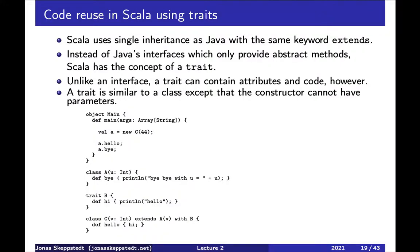Both Scala and Java have single inheritance, as opposed to C++ with multiple inheritance, for instance. Instead of Java's interface, Scala has a similar but more powerful concept called a trait. A trait can also contain code and attributes.